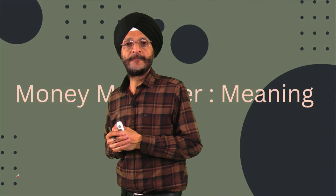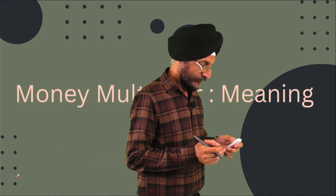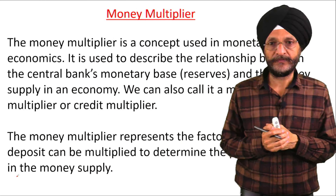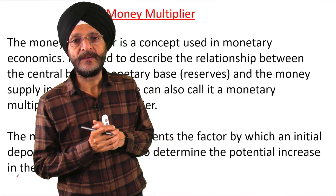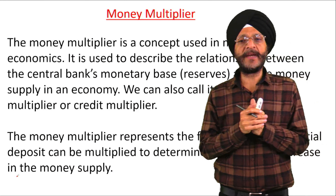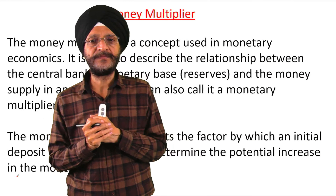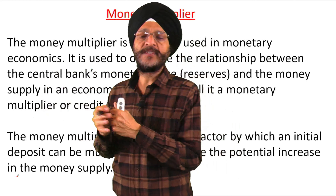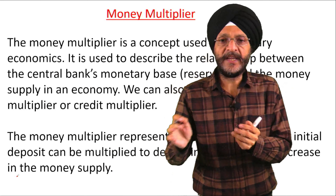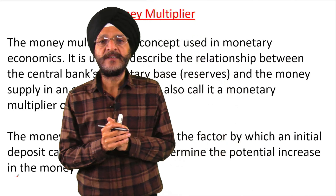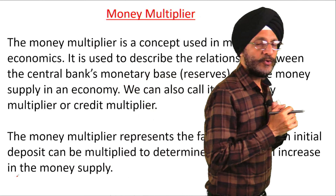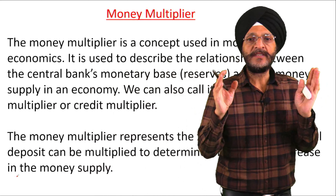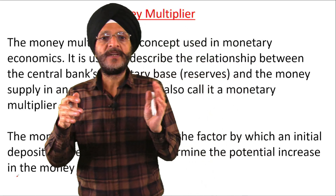Now the topic before us is money multiplier meaning. We often have our account with some commercial bank. We go to the commercial bank and deposit some money with the bank. Does the commercial bank keep all the money we deposit with itself? No. The bank has to bear many expenses such as salary of their staff, maintenance of the building, other infrastructure, computers, electricity expenses and so on. So banks cannot afford to keep all the money deposited by customers with themselves. They use the money deposited by customers for the purpose of lending or investment.